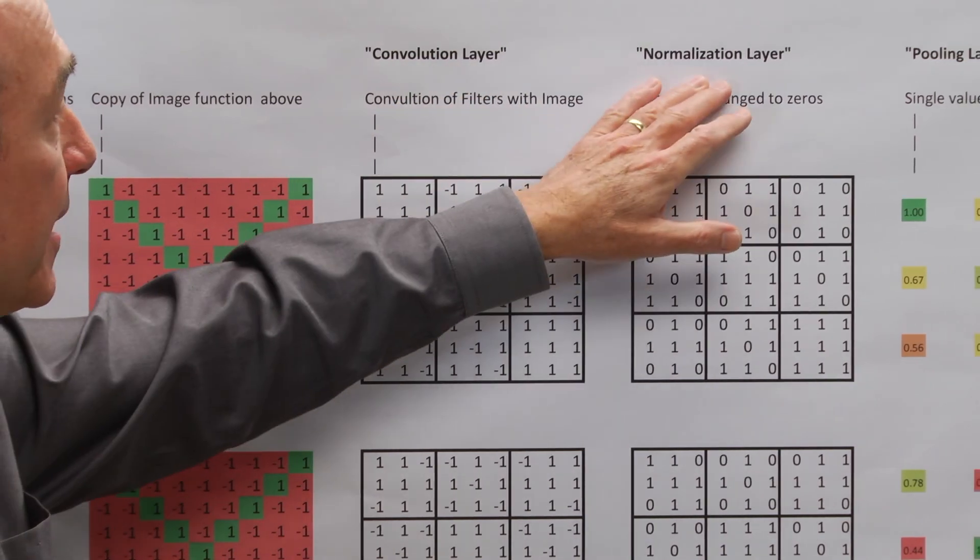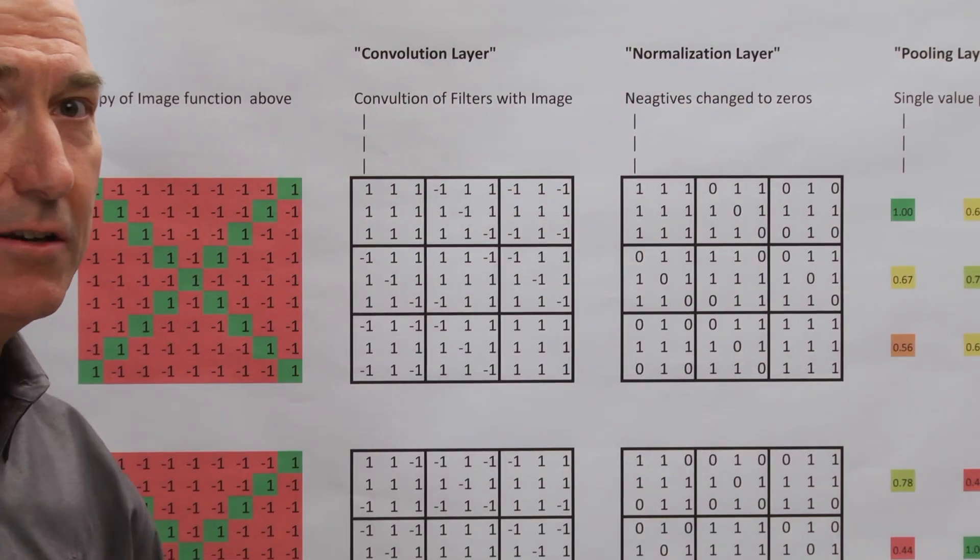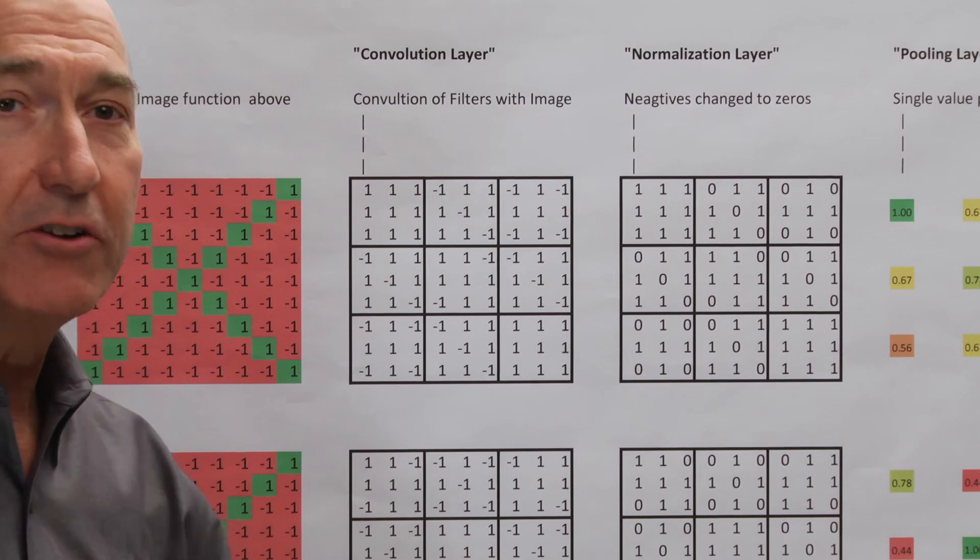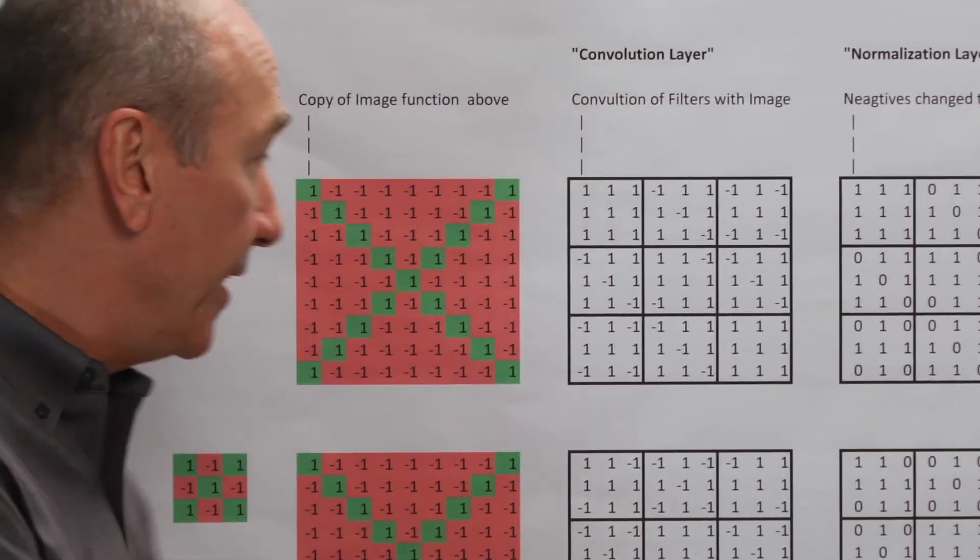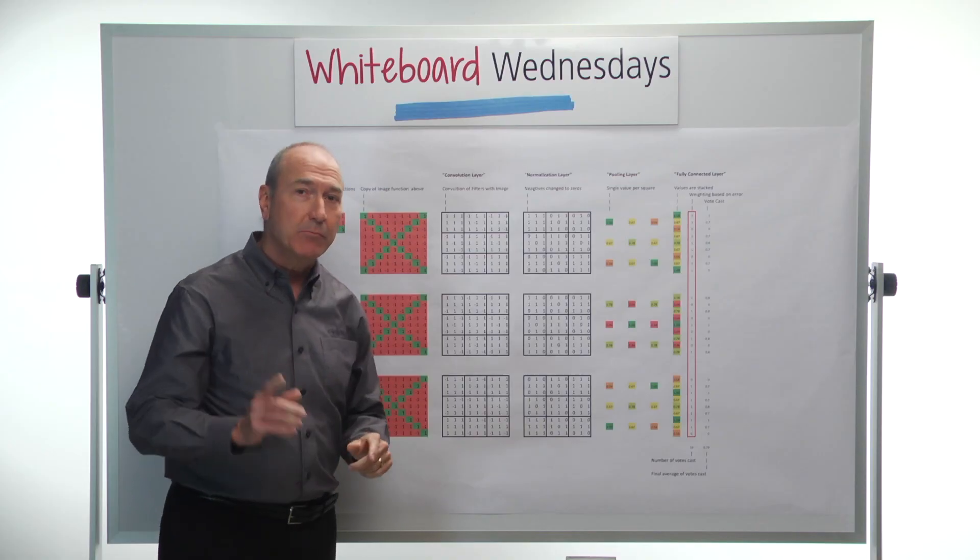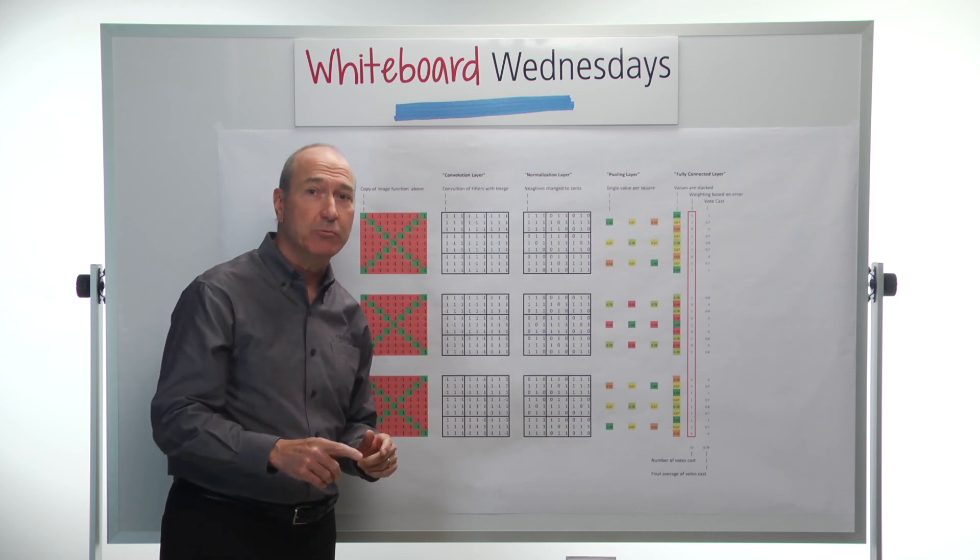We had our convolution layer, and our second layer here was a normalization layer. Now we've got two more layers to go before we get our answer as to whether this image is an X or not. But we'll cover that in next week's video.